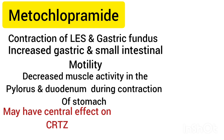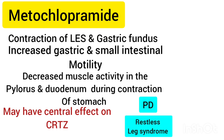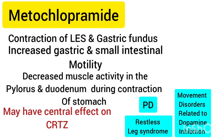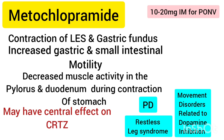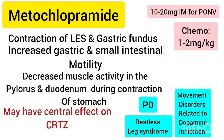Again, because of its anti-dopaminergic activity, metoclopramide should be used with caution in patients with Parkinson's disease, restless leg syndrome, and movement disorders related to dopamine inhibition. The usual dose for post-operative nausea and vomiting prevention or control is 10 to 20 mg intramuscular. But in the case of chemotherapy-induced vomiting, the dose is 1 to 2 mg per kg of body weight, given over at least 15 minutes.